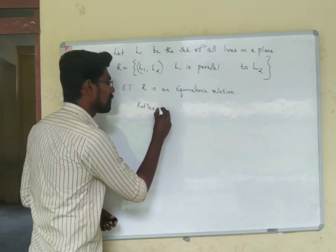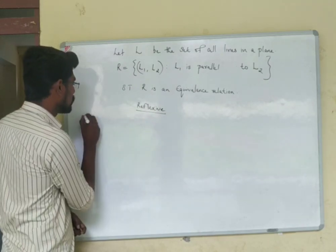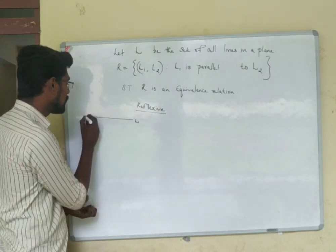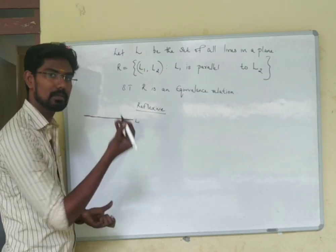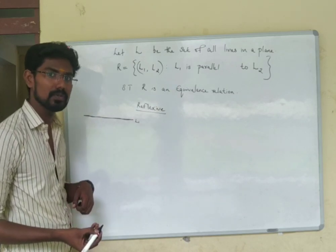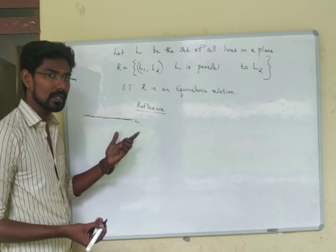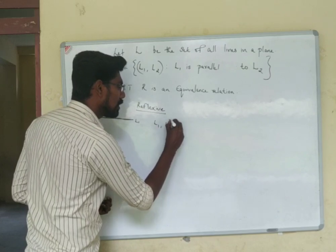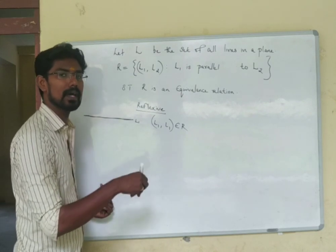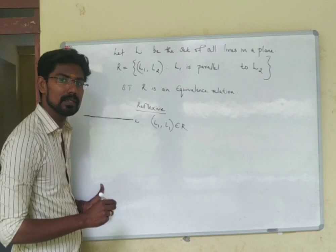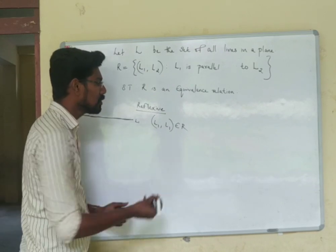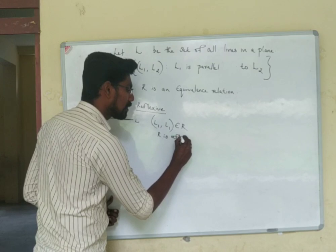First, reflexive: Is L1 parallel to L1? Every line is parallel to itself. So (L1, L1) ∈ R for every line L1. Therefore R is reflexive.